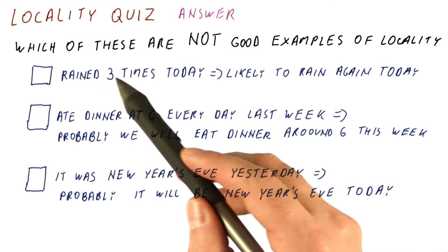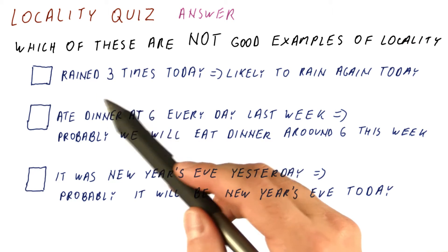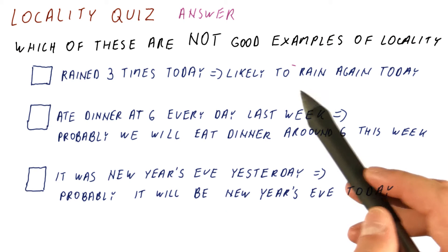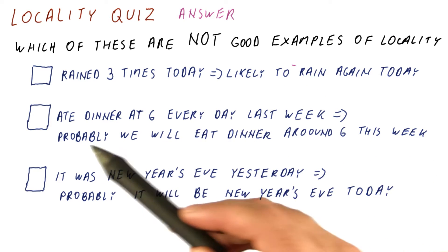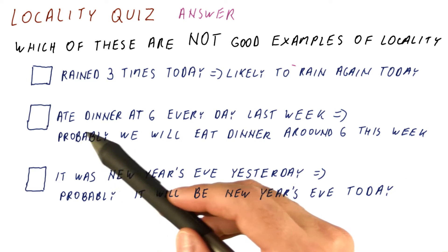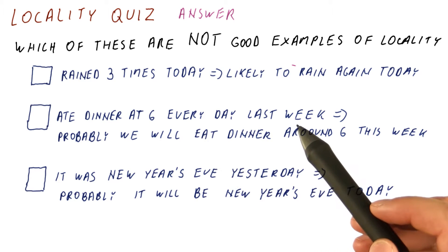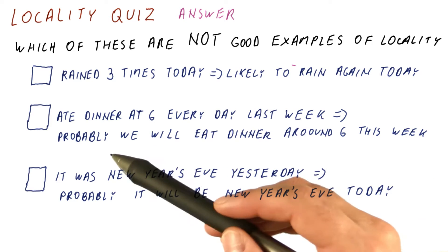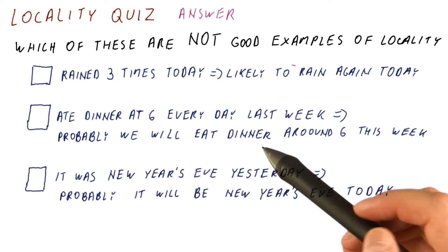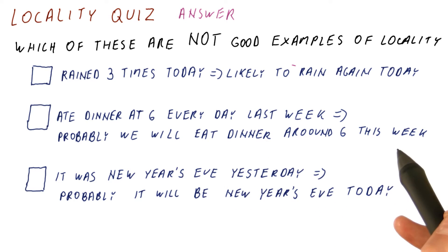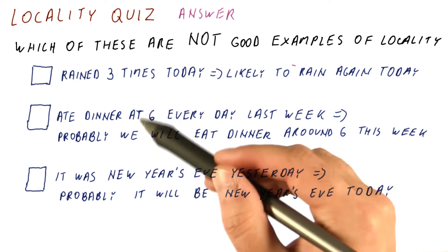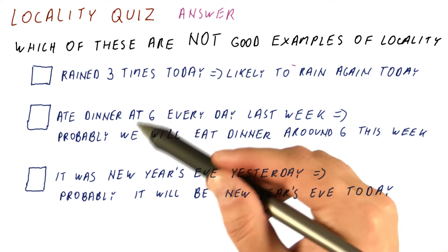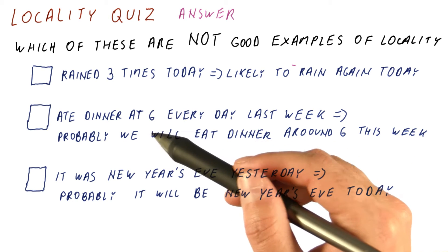Usually, if it rained often, it's probably going to just continue raining often for a while. We ate dinner at 6 every day last week, so probably we will eat dinner around 6 this week too. This also tends to be true — people tend to eat meals around the same time for a while.